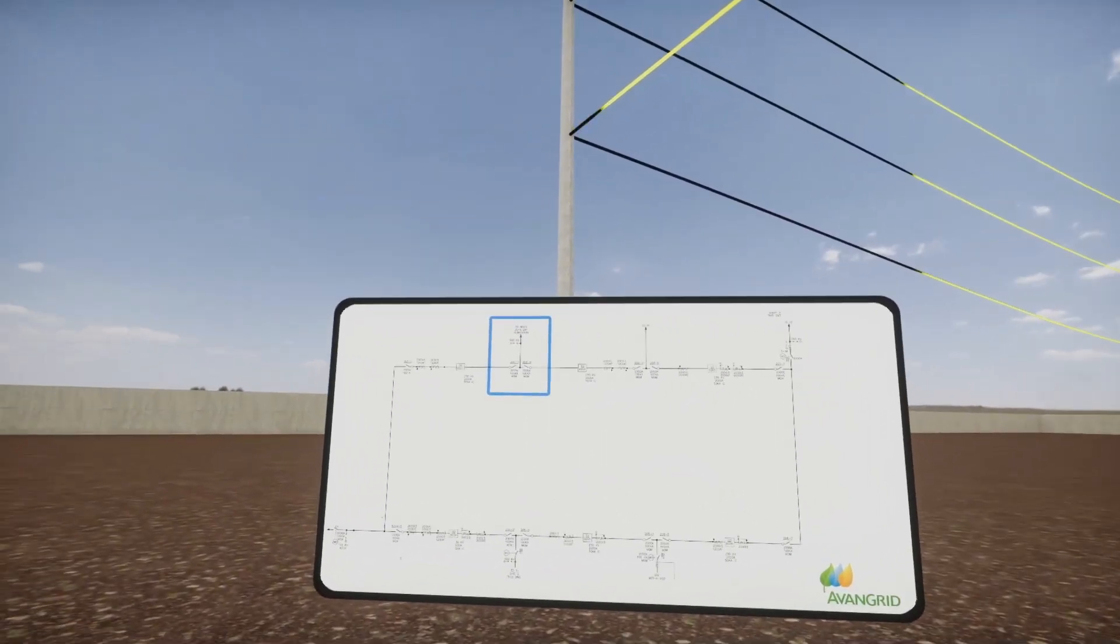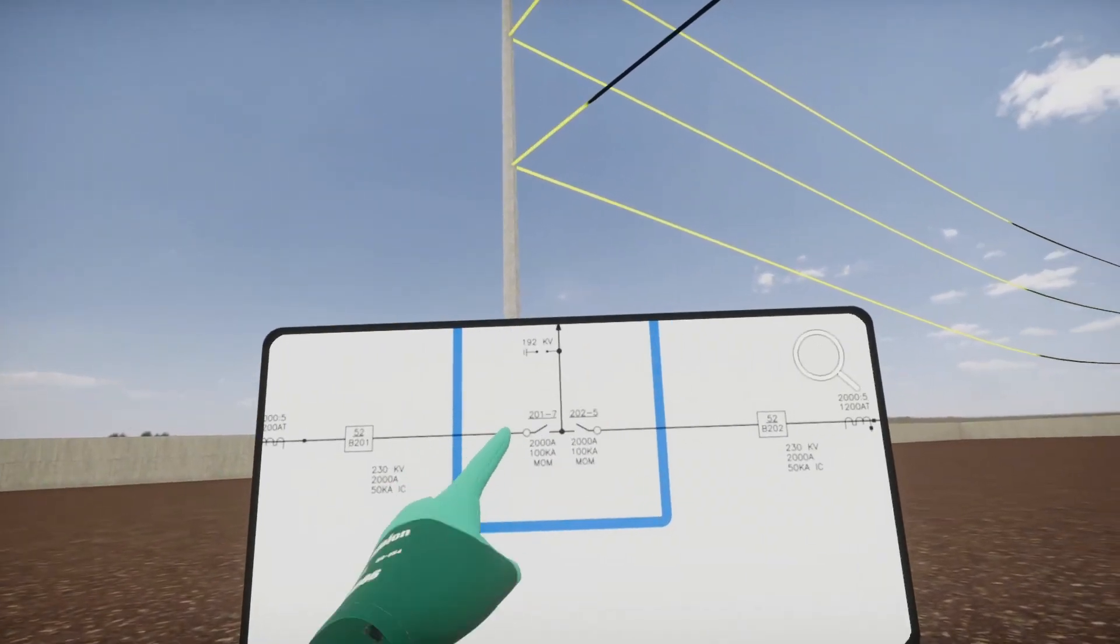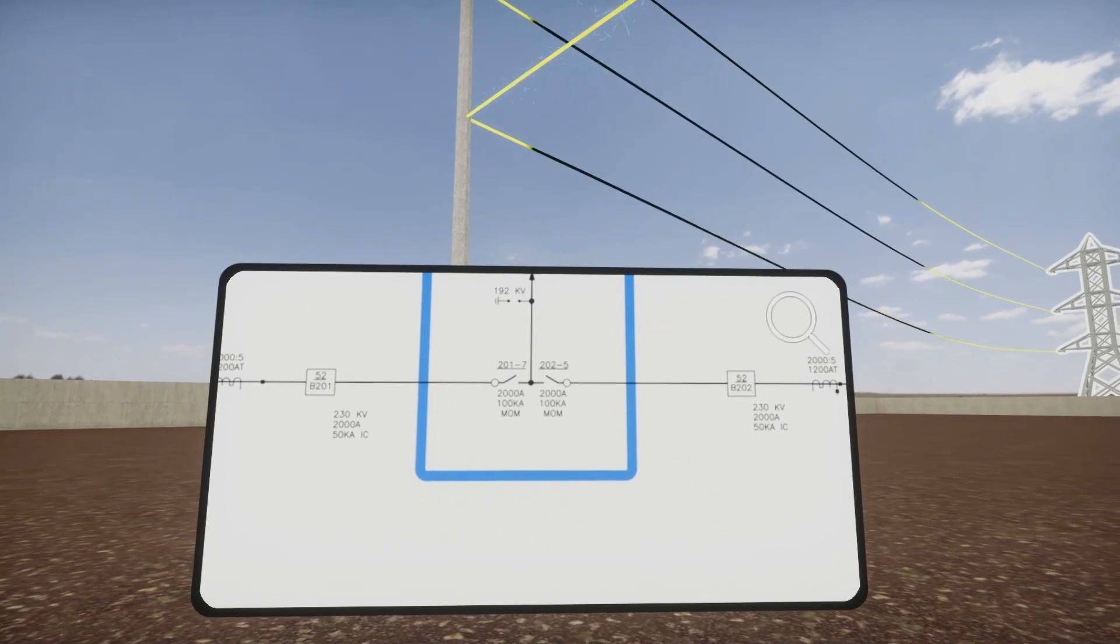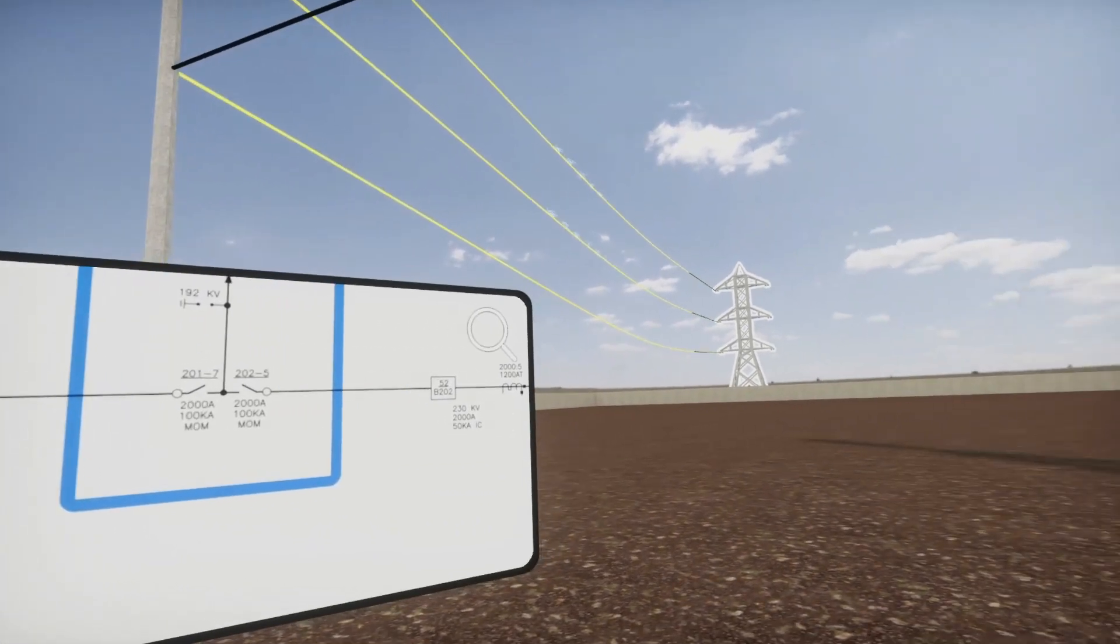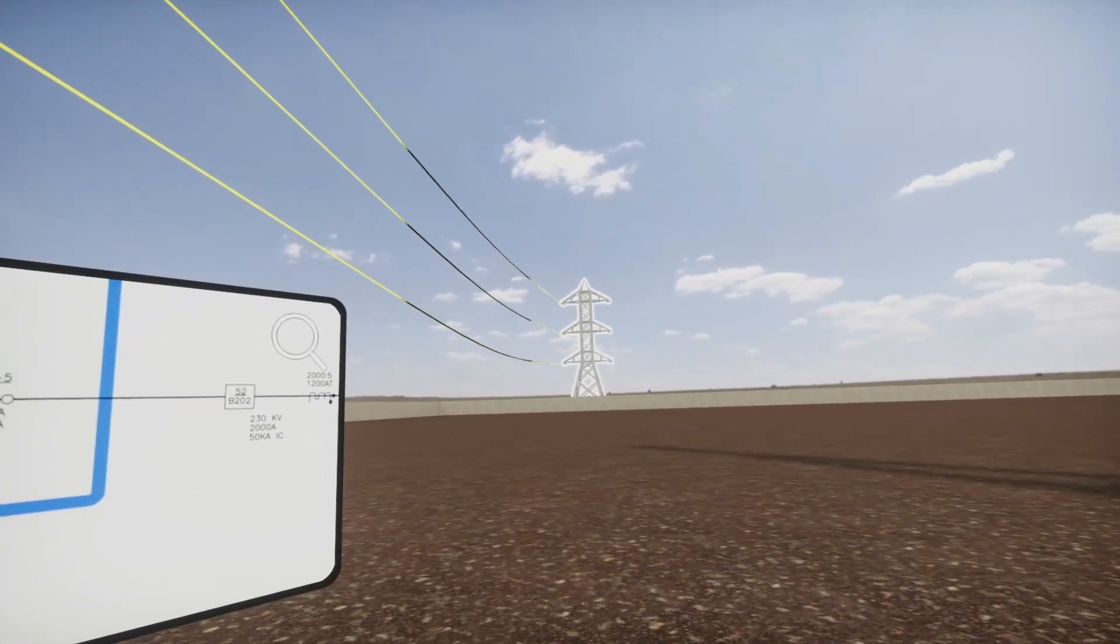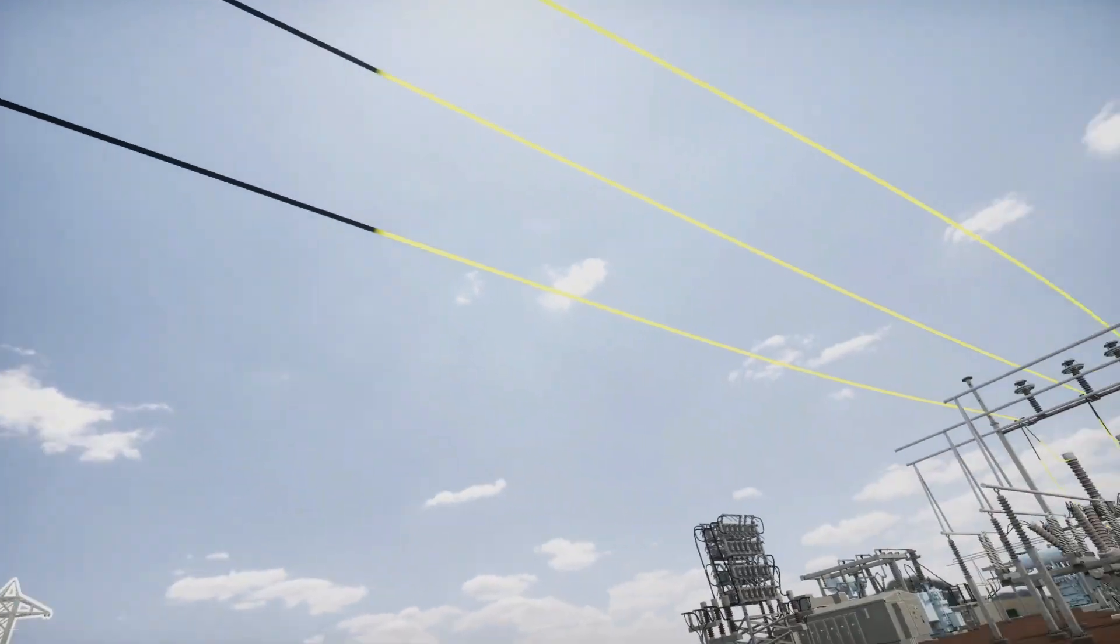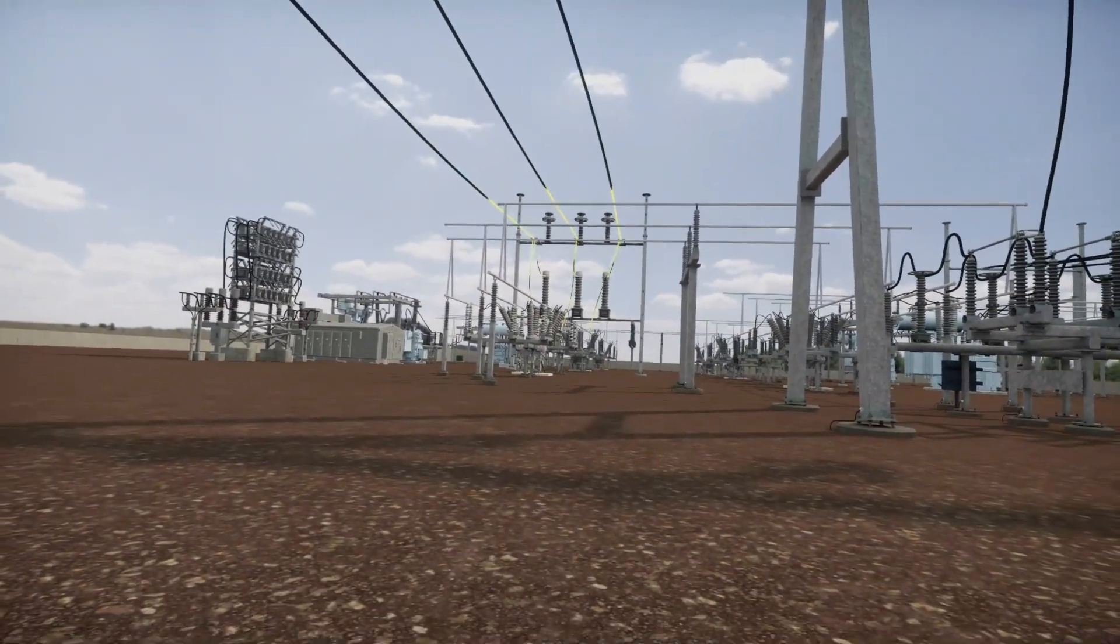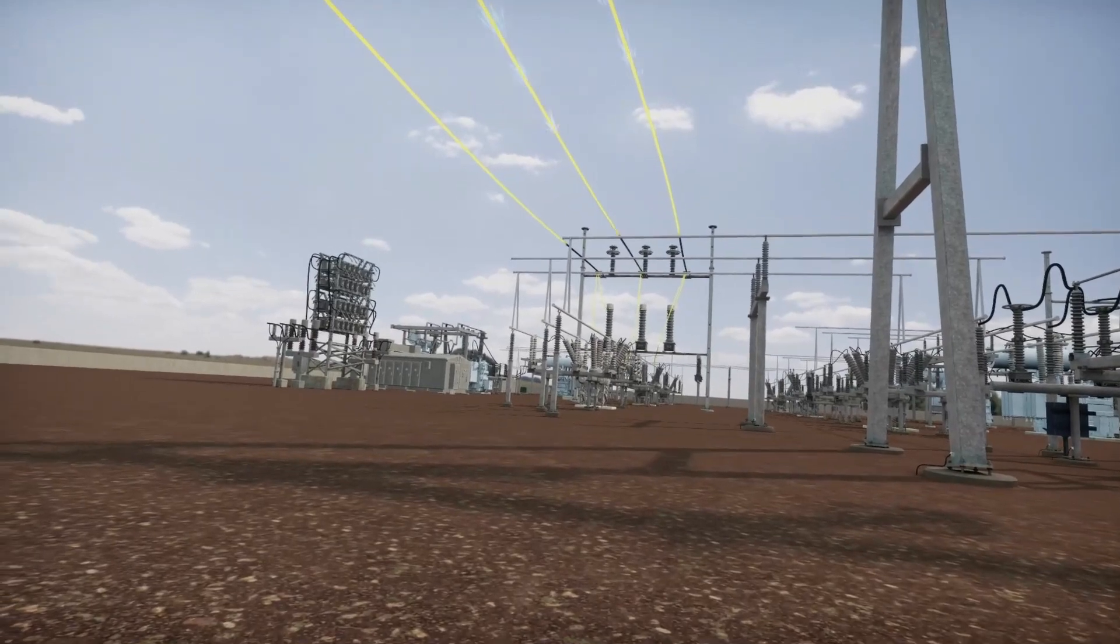Overhead AC power lines transmit high voltage to help reduce energy losses over long distances. The higher the voltage, the lower the current. The lower the current, the lower the resistance losses in the conductors. And when resistance losses are low, energy losses are low also.